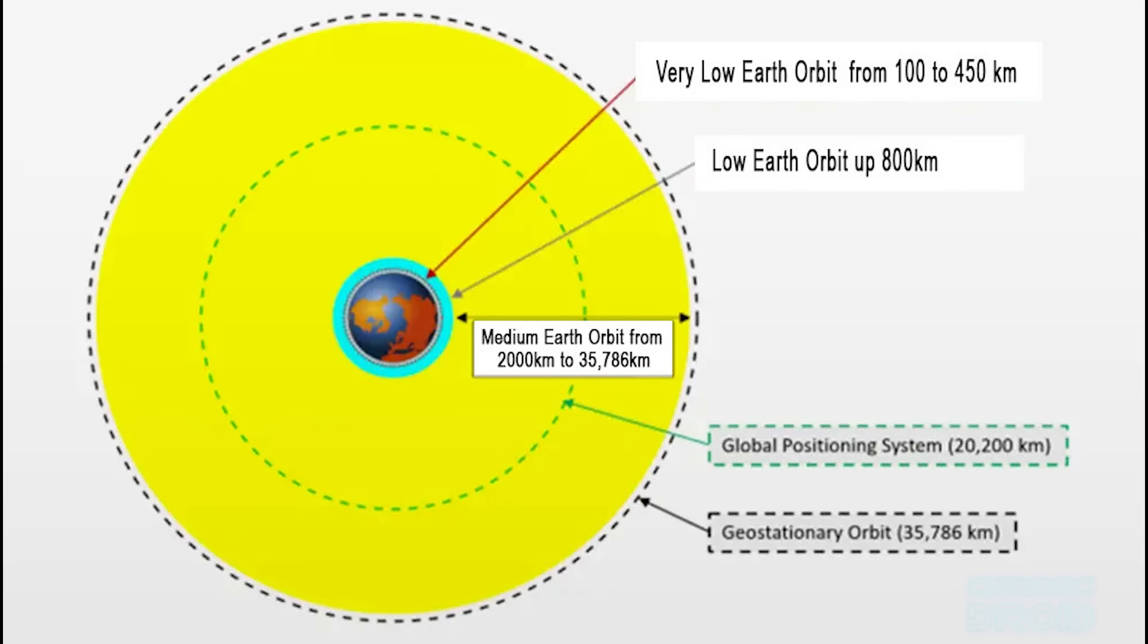To enable this, satellites are placed into different orbital shells or orbital altitudes. These include the very low earth orbit from 100 to 450 kilometers, low earth orbit up to 800 kilometers, medium earth orbit from 2000 to 35,786 kilometers, geostationary orbit which is also 35,786 kilometers, and high earth orbit.